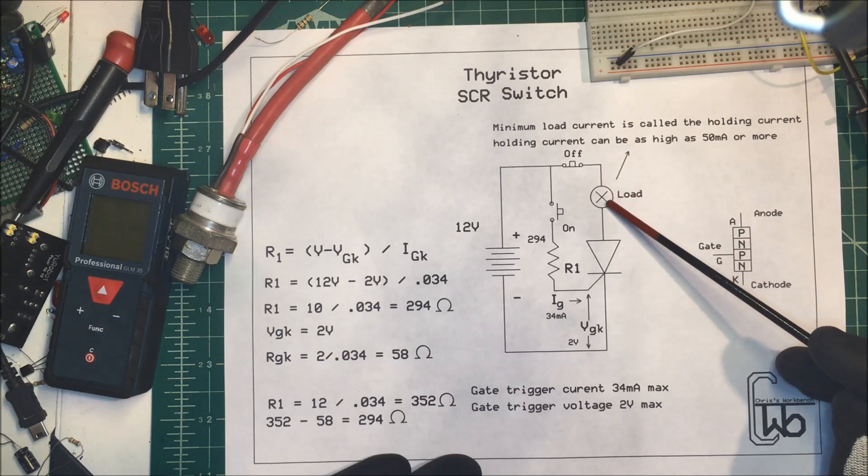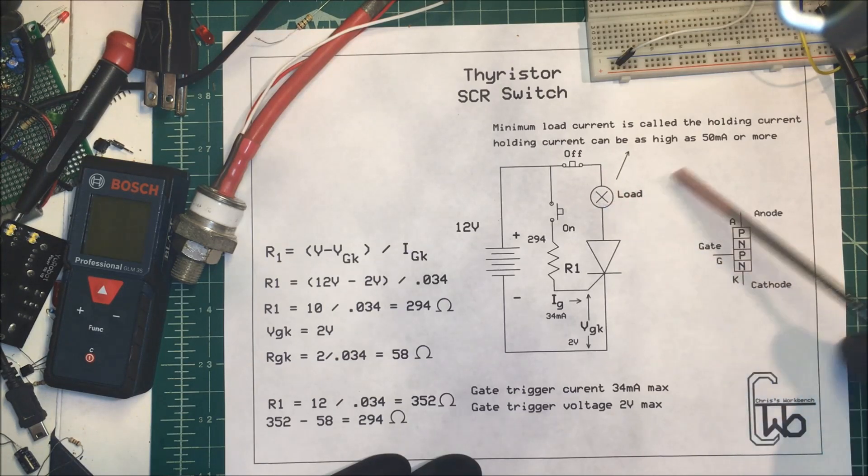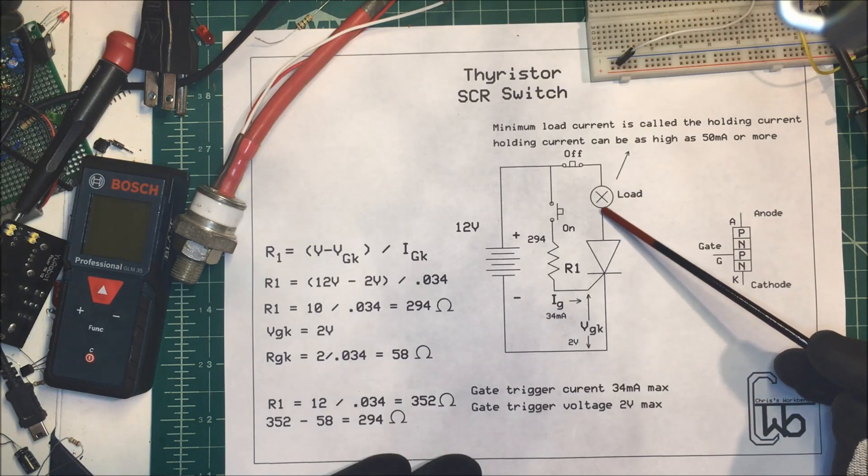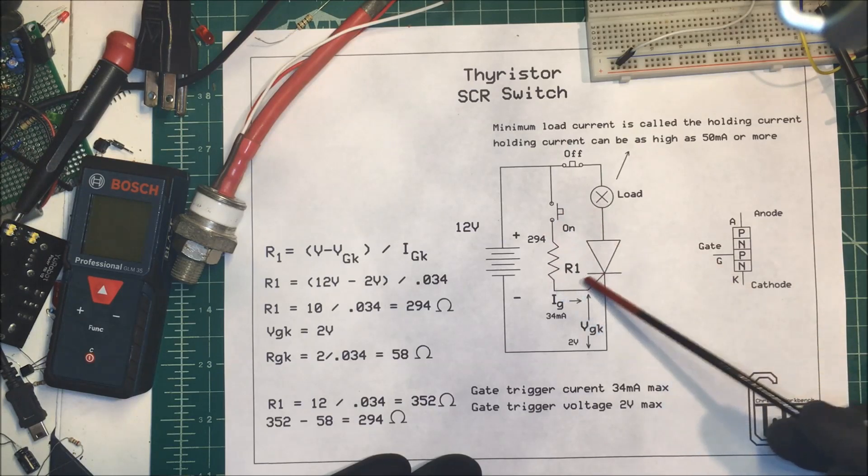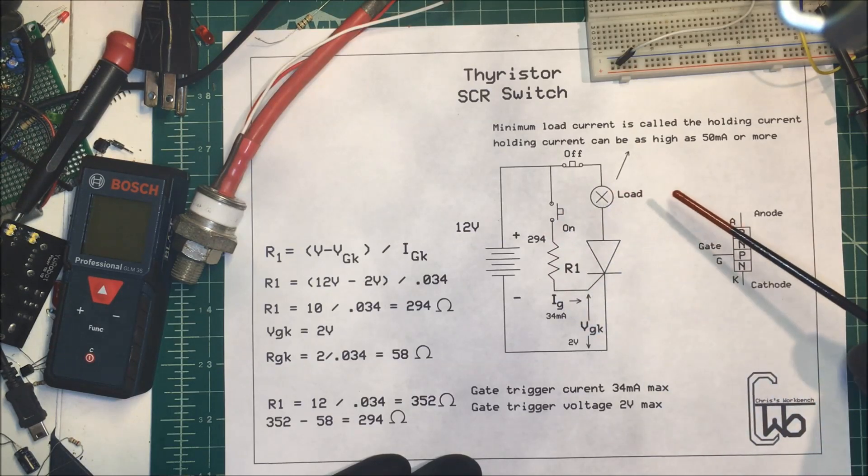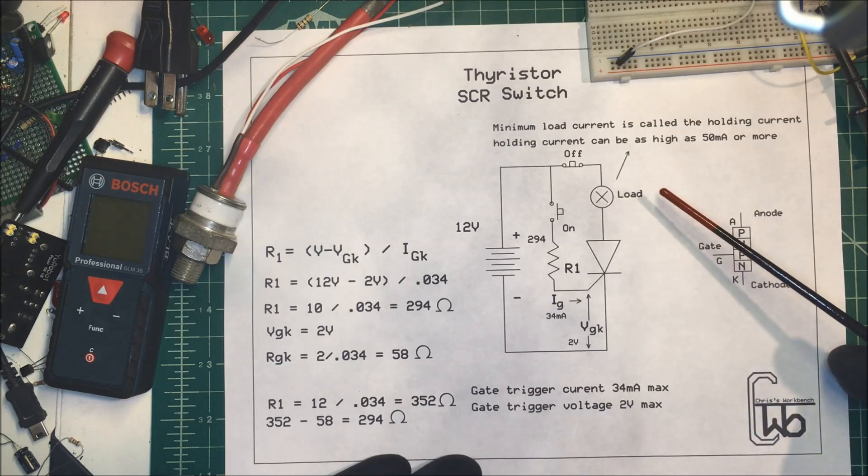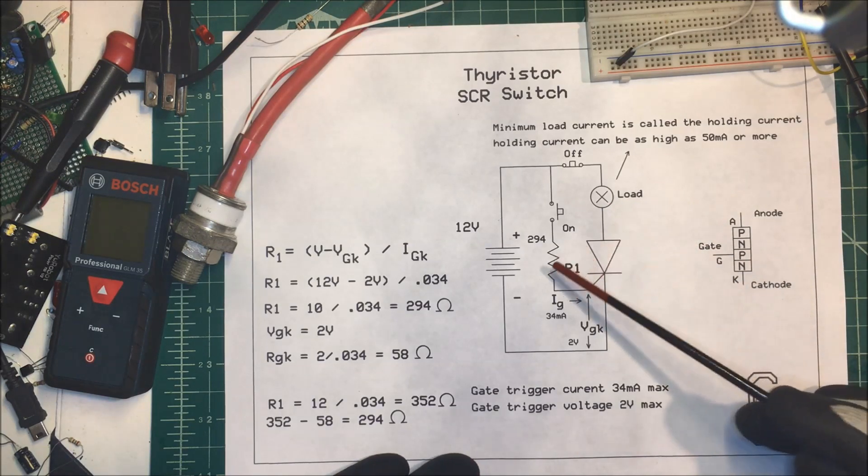So this load has to have a low enough resistance to enable 50 milliamps to go through here. An LED isn't enough, so it won't turn the unit on. You can put voltage to the gate all day long with an LED here and it just won't turn on.